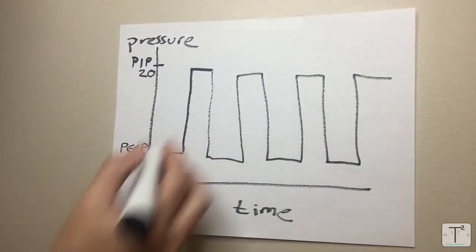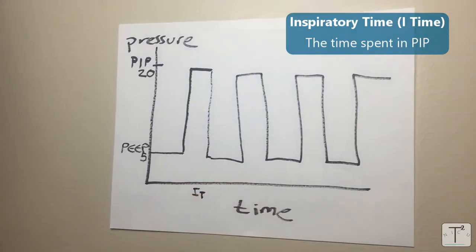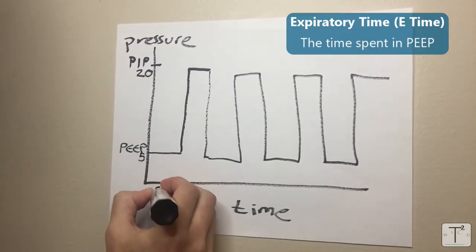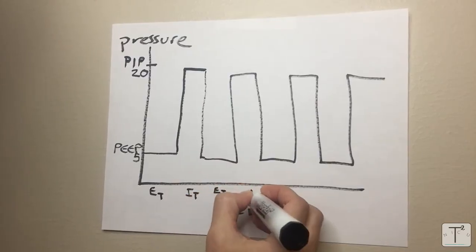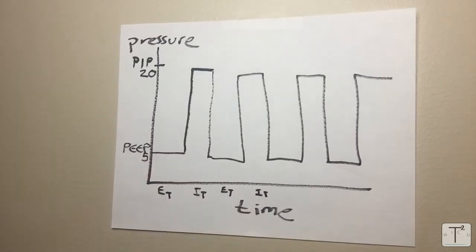The time spent in PIP is called the I time or the inspiratory time and the time spent in PEEP, although we don't use this as often, is called the E time. Here you see E time and then I time. One breath is equal to the E time plus the I time.